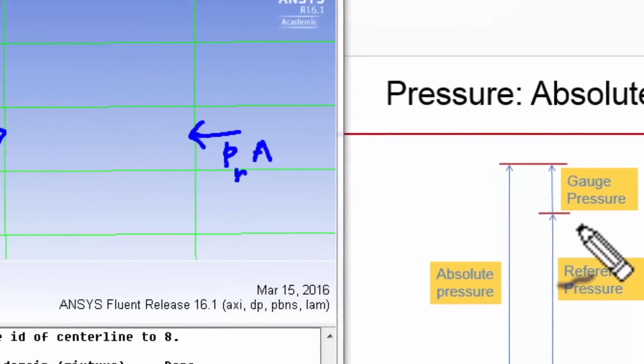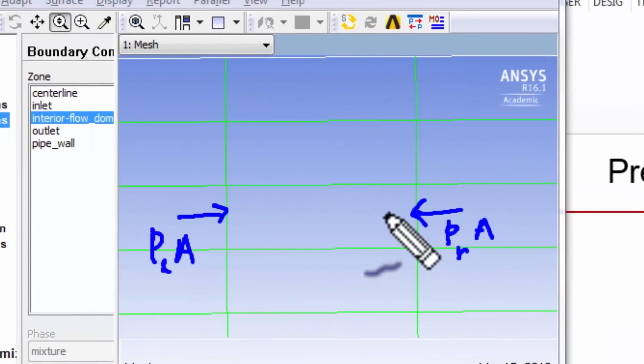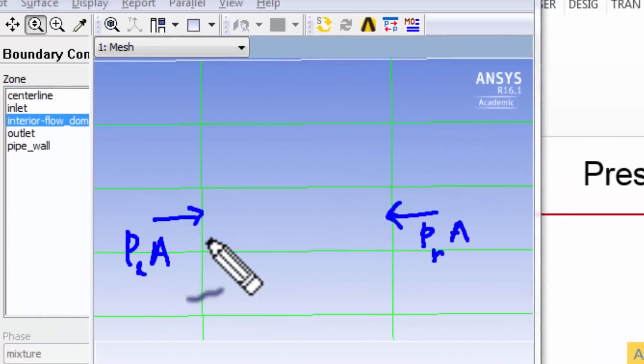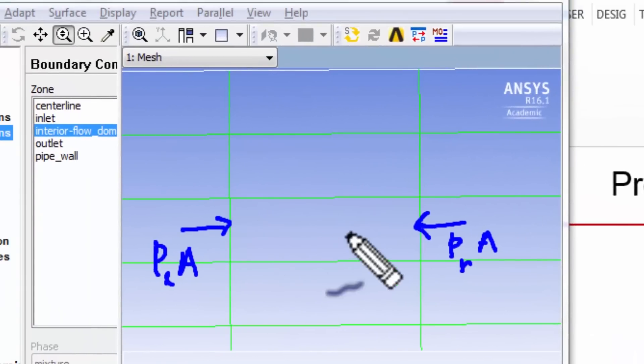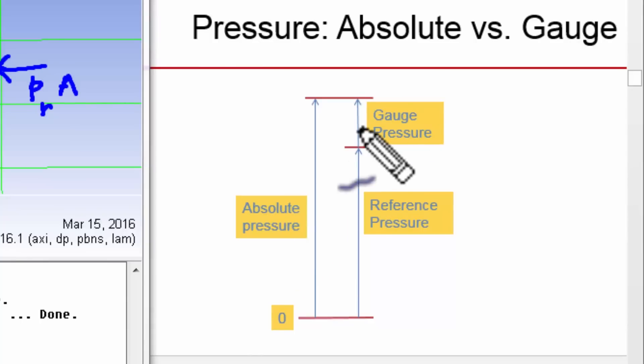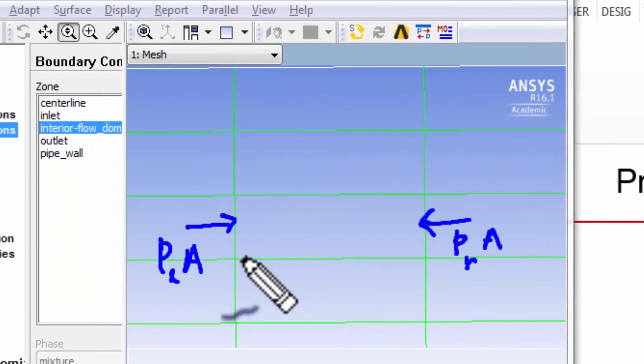And so if you pick the reference pressure to be an appropriate value, the gauge pressure is going to basically track variations from that reference. So in our problem, there are going to be variations around the atmospheric pressure. So if I pick the reference pressure to be one atmosphere, then this is going to be a small value of gauge pressure. And when I take the difference, it doesn't matter whether I take the difference of the absolute pressure or the gauge pressure, I'll get the same value, I'm going to get small differences of small numbers.